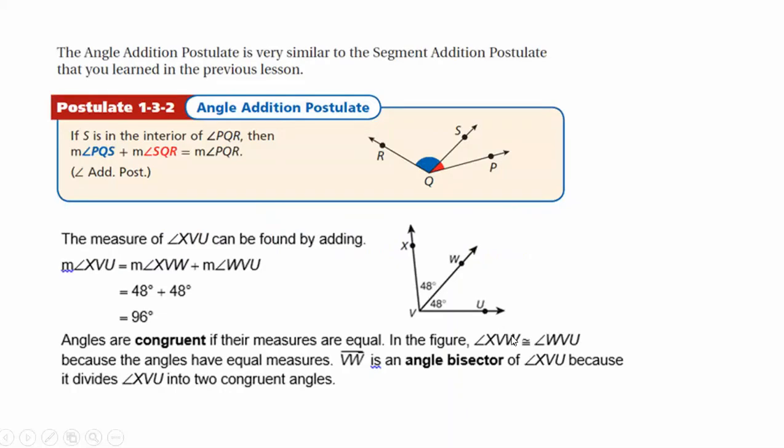First of all, we need to review the angle addition postulate. That is when you have an angle made up of two angles hooked together, the measure of angle RQS plus the measure of angle SQP, the blue angle plus the red angle, will equal the measure of the whole angle.